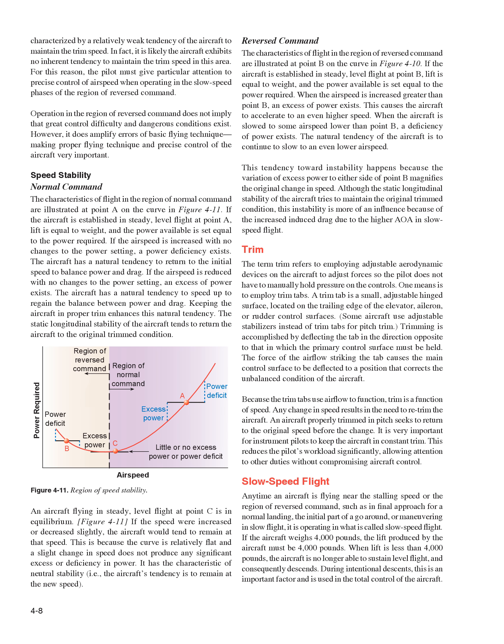Slow Speed Flight. Anytime an aircraft is flying near the stalling speed or the region of reversed command — such as in final approach for a normal landing, the initial part of a go-around, or maneuvering in slow flight — it is operating in what is called slow speed flight. If the aircraft weighs 4,000 pounds, the lift produced must be 4,000 pounds. When lift is less than 4,000 pounds, the aircraft is no longer able to sustain level flight and consequently descends. During intentional descents, this is an important factor in the total control of the aircraft.